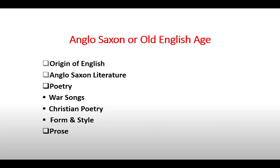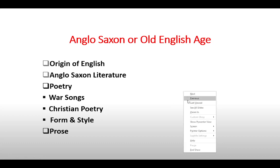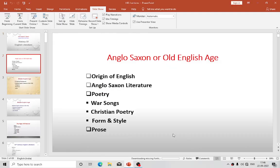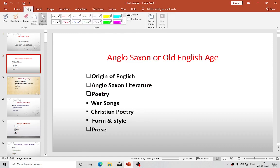Firstly, we are going to start on the Anglo-Saxon age. At the beginning, we are going to talk about the origin of English literature — how there was the origin of English literature — as well as before that, how there was the origin of English language especially.